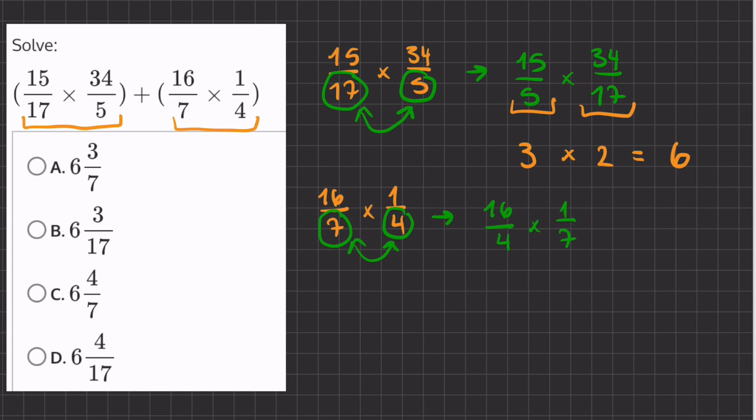Now if we simplify this fraction we will have 4 times 1 over 7. Now when we multiply these two fractions we have a denominator of 1 here, so we will have 4 over 7. Now we can take our two values and add them together.